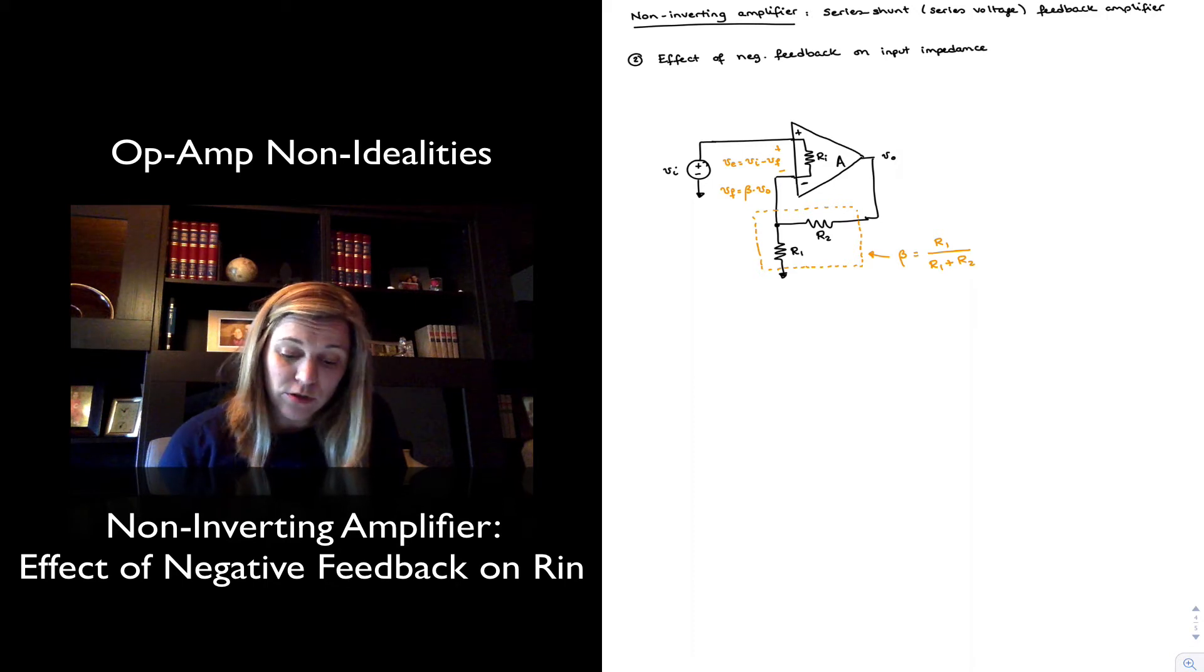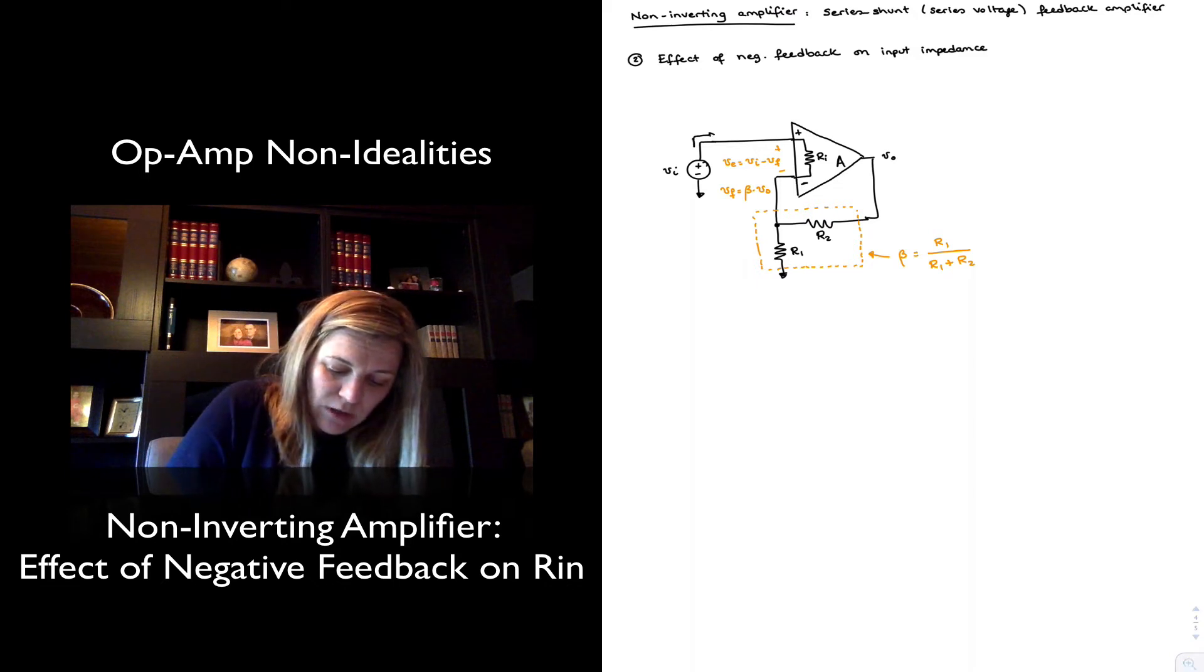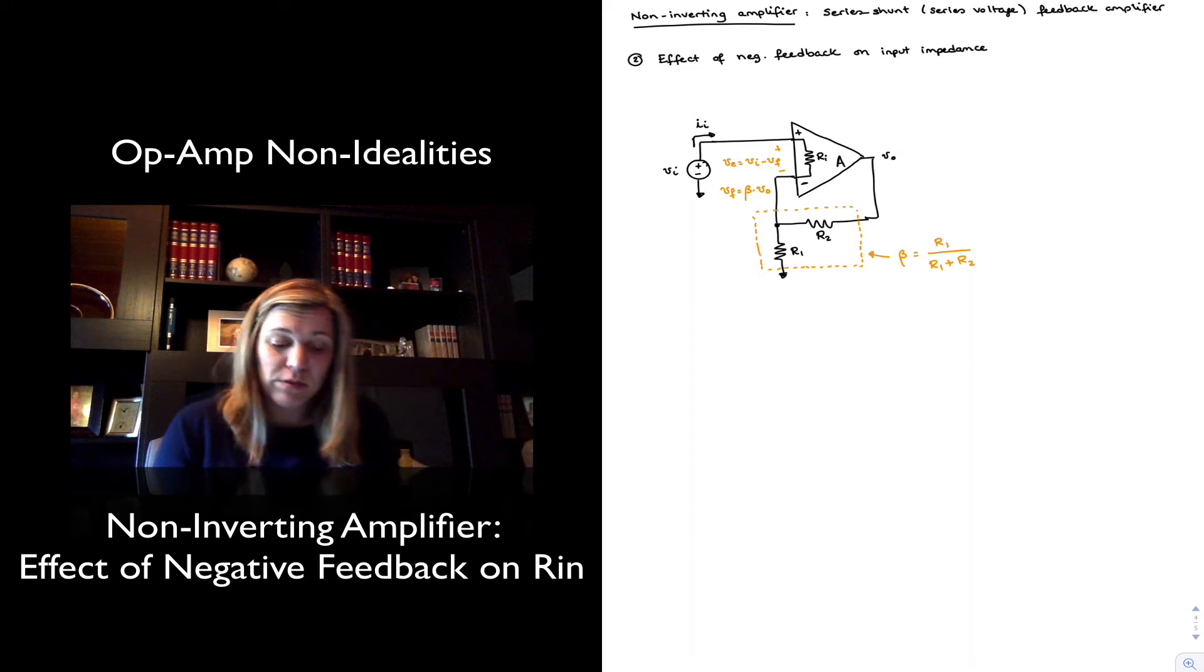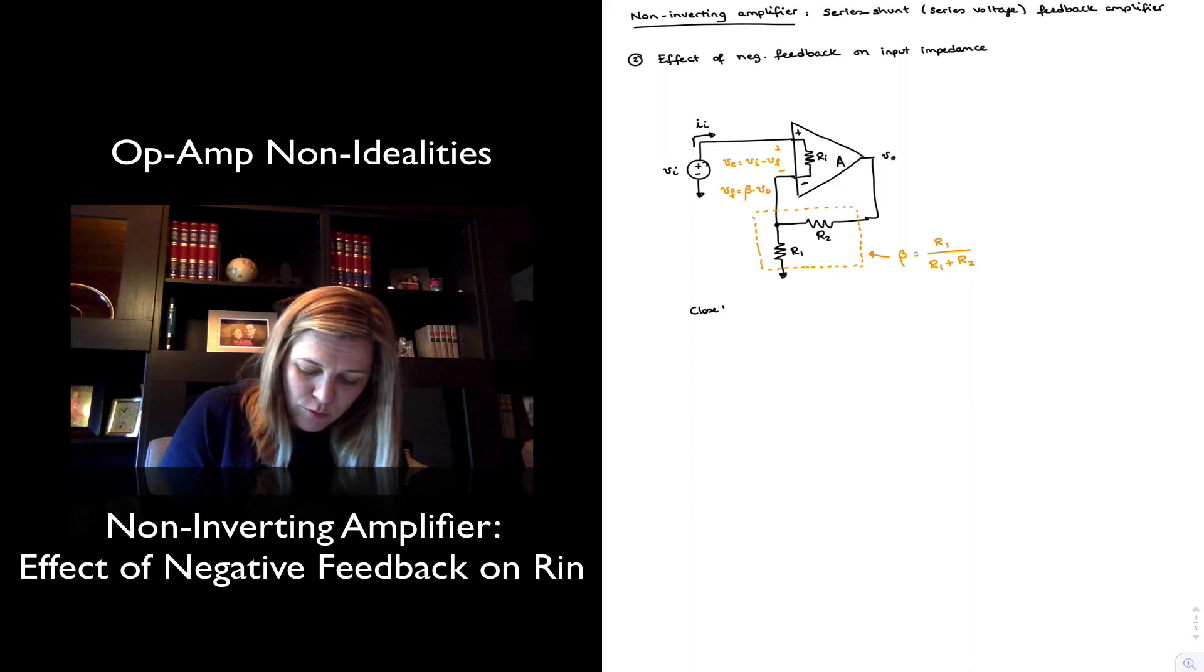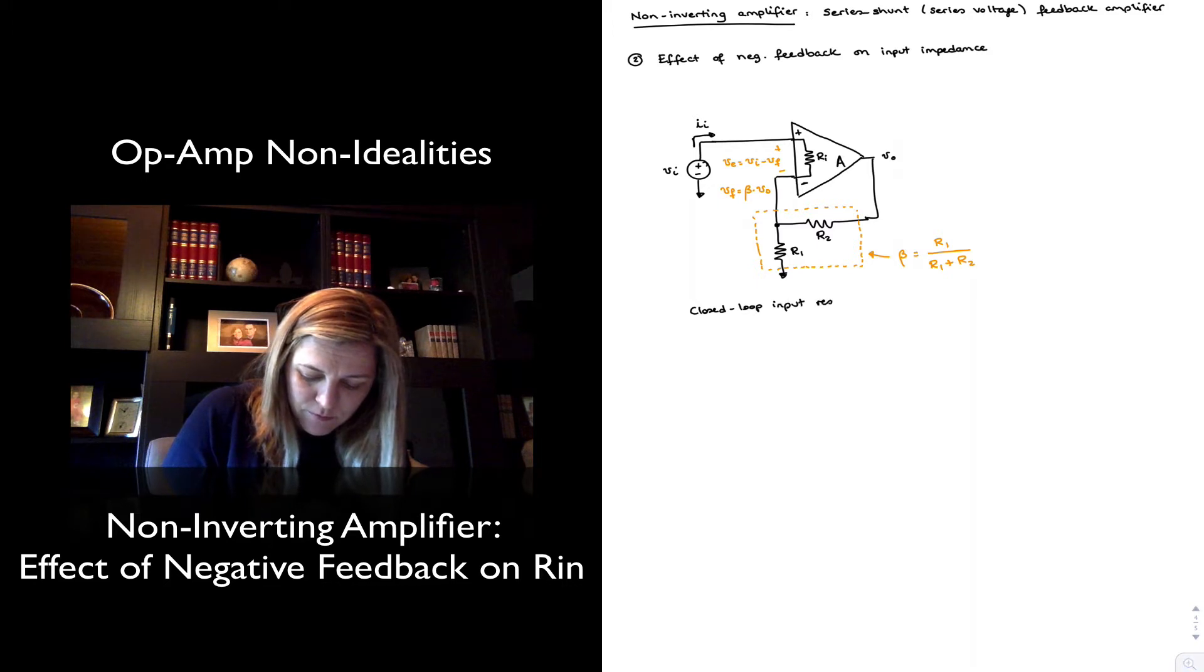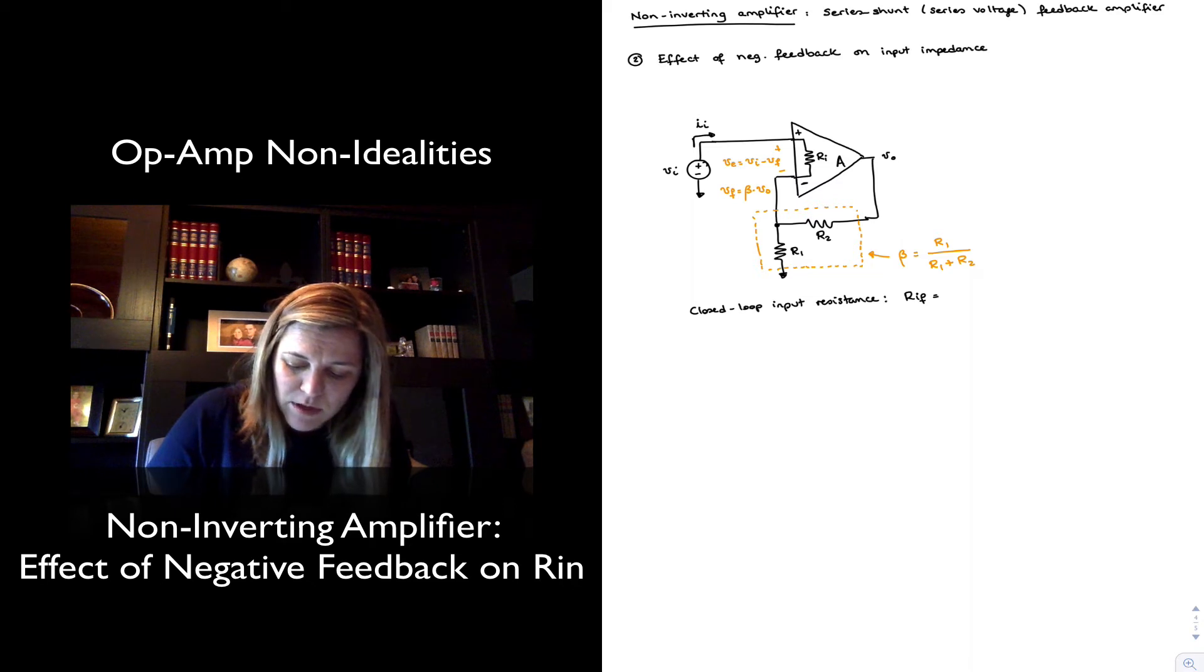In order to explore the input resistance, we can simply calculate the current that's going into the circuit, ii, and we know that the input resistance of the overall feedback system, rif, so closed loop input resistance, ri sub f for feedback system, it's going to be vin divided by iin.